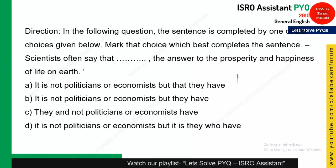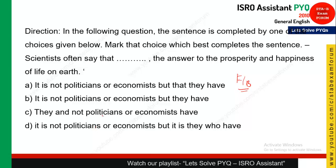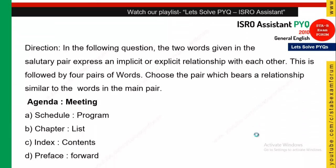This is again from fill-in-the-blanks. From my perspective there could be two options for this question — B and D. The sentence is: 'Scientists often say that it is not politicians or economists but ___ who have the answer to the prosperity and happiness of life on earth.' I am not entirely sure, but I think option D should be the correct answer. You can check and let us know in the comment box.